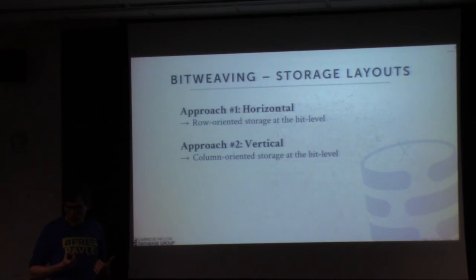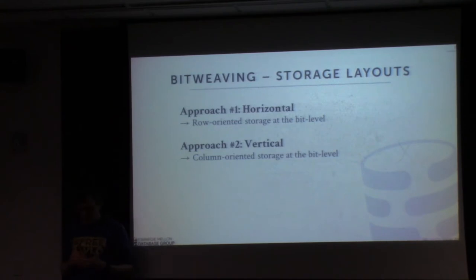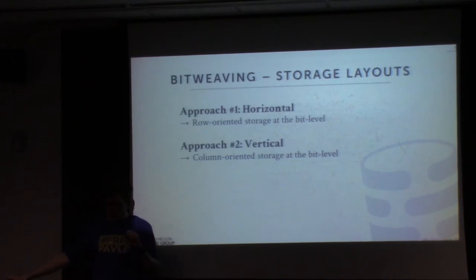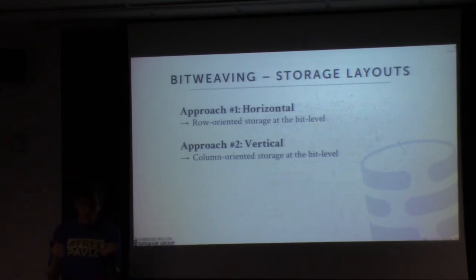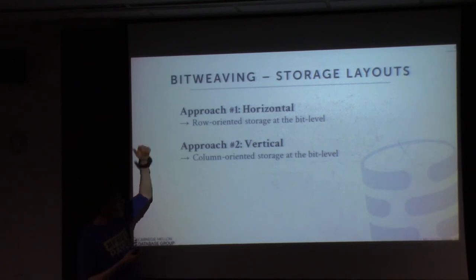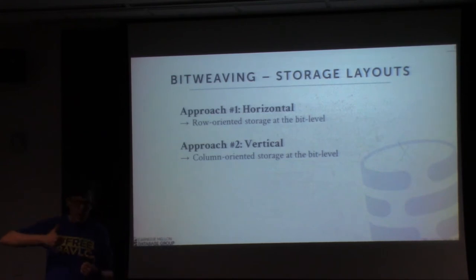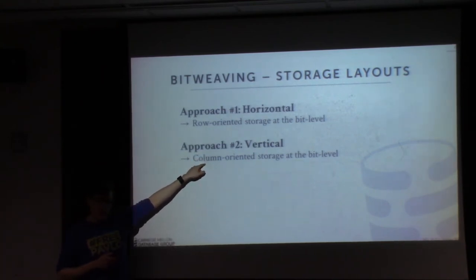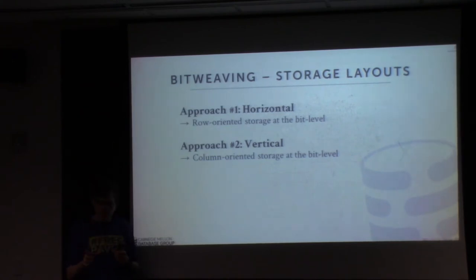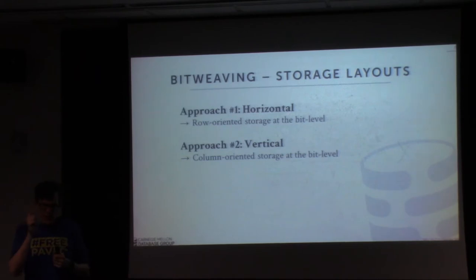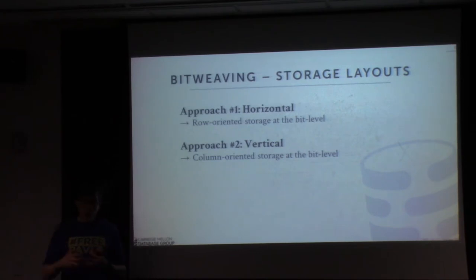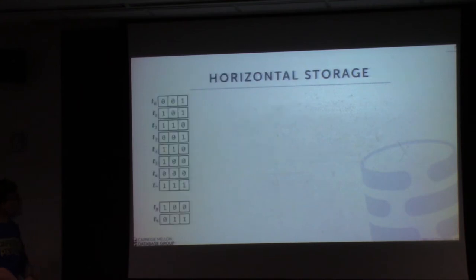The two main things to understand from the bit weaving paper are its two layout schemes: horizontal and vertical. We're talking about a DSM (columnar) database, but within a single column you can have two different bit-level organizations. Horizontal layout is row-oriented at the bit level; vertical layout is column-oriented and looks a lot like the bitmap indexes we discussed earlier.